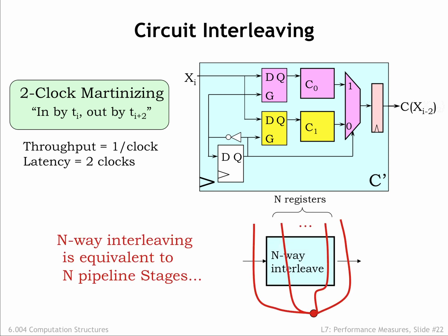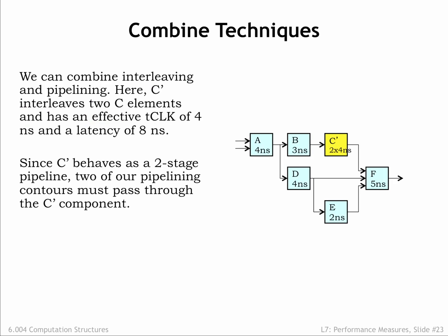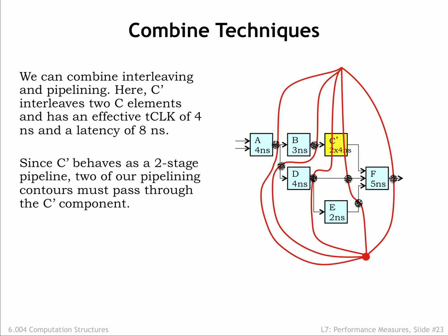When incorporating an N-way interleaved component in our pipeline diagrams, we treat it just like an N-stage pipeline, so N of our pipelining contours have to pass through the component. Here we've replaced the slow, unpipelined C component with a two-way interleaved C' component. We can follow our process for drawing pipeline contours. First, we draw a contour across all the outputs. Then we add contours, ensuring that two of them pass through the C' component. Then we add pipeline registers at the intersections of the contours with the signal connections. We see that the contours passing through C' have caused extra pipeline registers to be added to the other inputs to the F module, accommodating the two-cycle delay through C'.